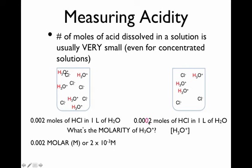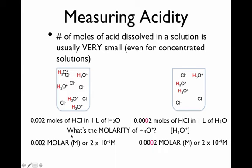For the right container: 0.0002 moles divided by 1 liter equals 0.0002 molar, or 2 × 10⁻⁴ molar. So the left container's acid concentration is 2 × 10⁻³ molar, and the right container's is 2 × 10⁻⁴ molar. The left container is 10 times more concentrated — 2 × 10⁻³ compared to 2 × 10⁻⁴.